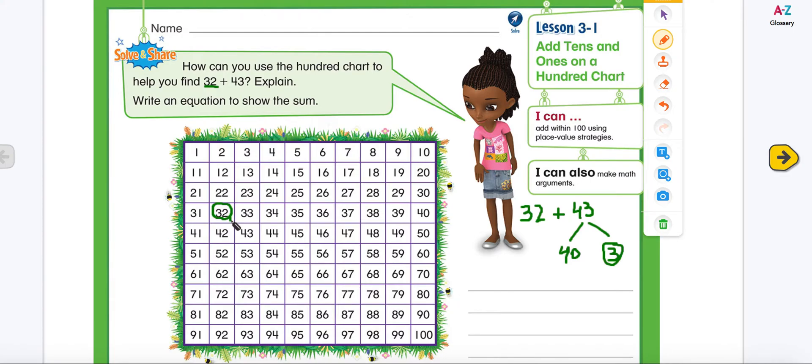So this is 1. If I add 1 ten to 32, it will give me 42 and you can actually check it. 32 plus 1, 2, 3, 4, 5, 6, 7, 8, 9, 10 gives you 42.